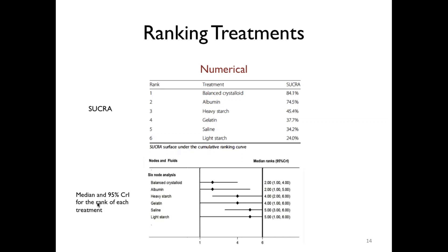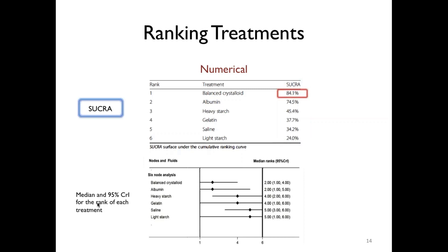This is another way to present NMA results using a numerical approach. The numerical approach involves the surface under the cumulative ranking curve, or SUCRA, where a nominal ranking is presented and a single number is associated with each rank. SUCRA values go from 0 to 100%. The higher the SUCRA value and the closer to 100, the higher the likelihood that an intervention is in the top rank. The closer to 0, the more likely that an intervention is in the bottom rank.